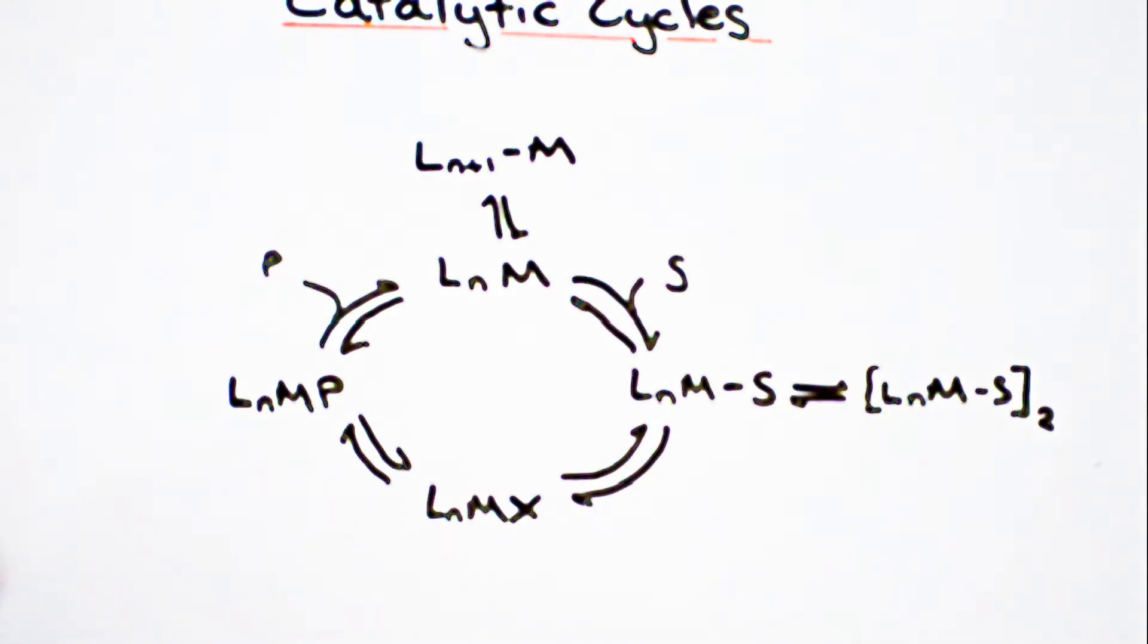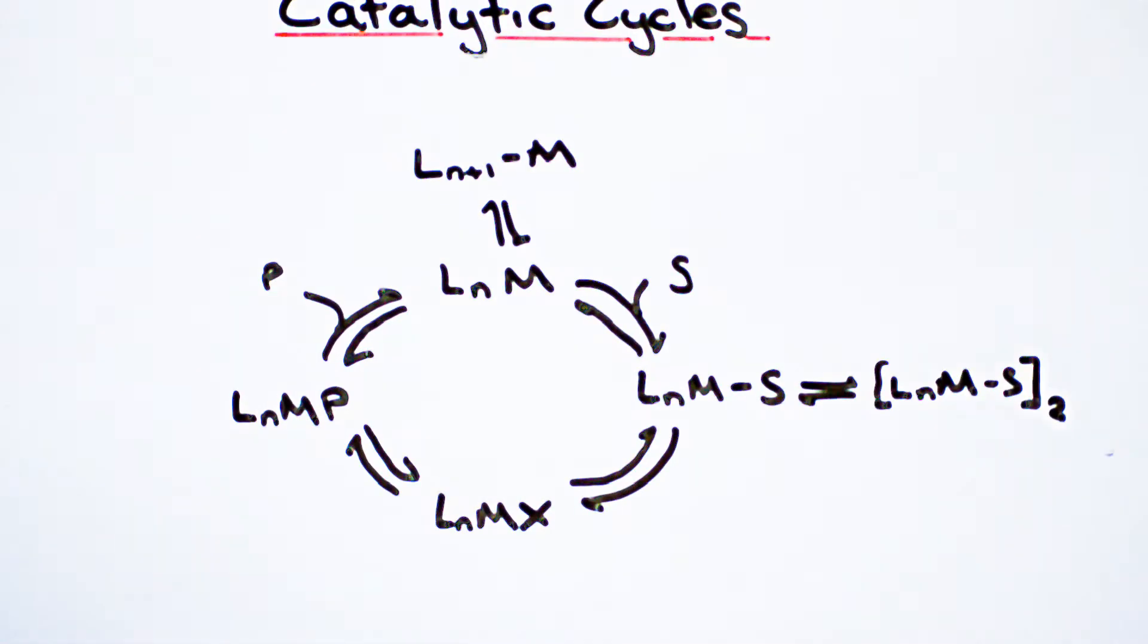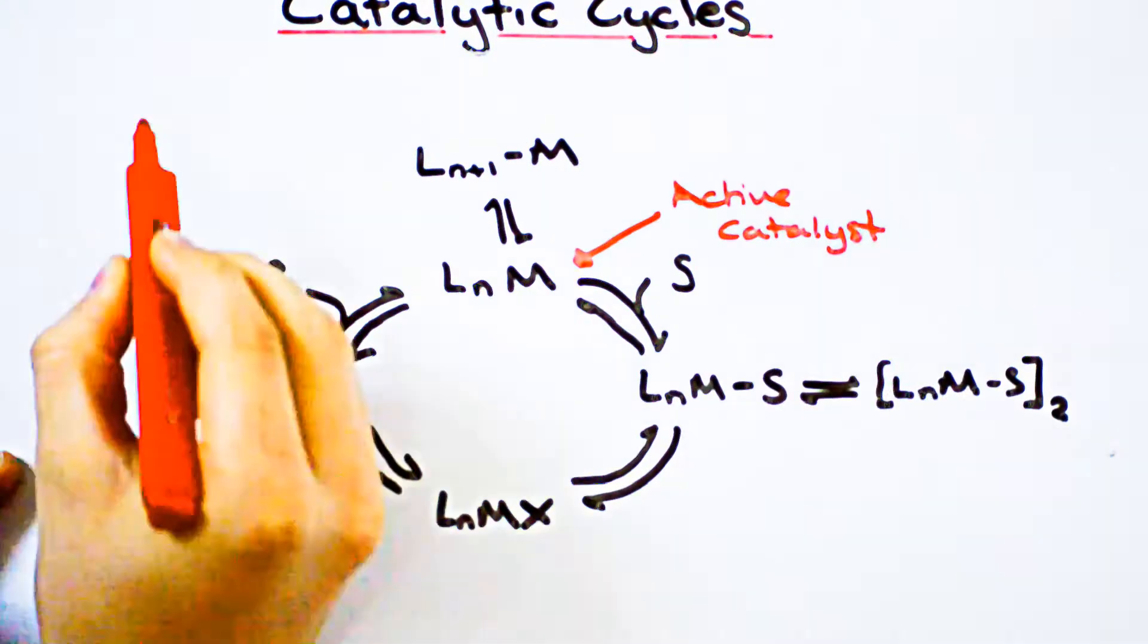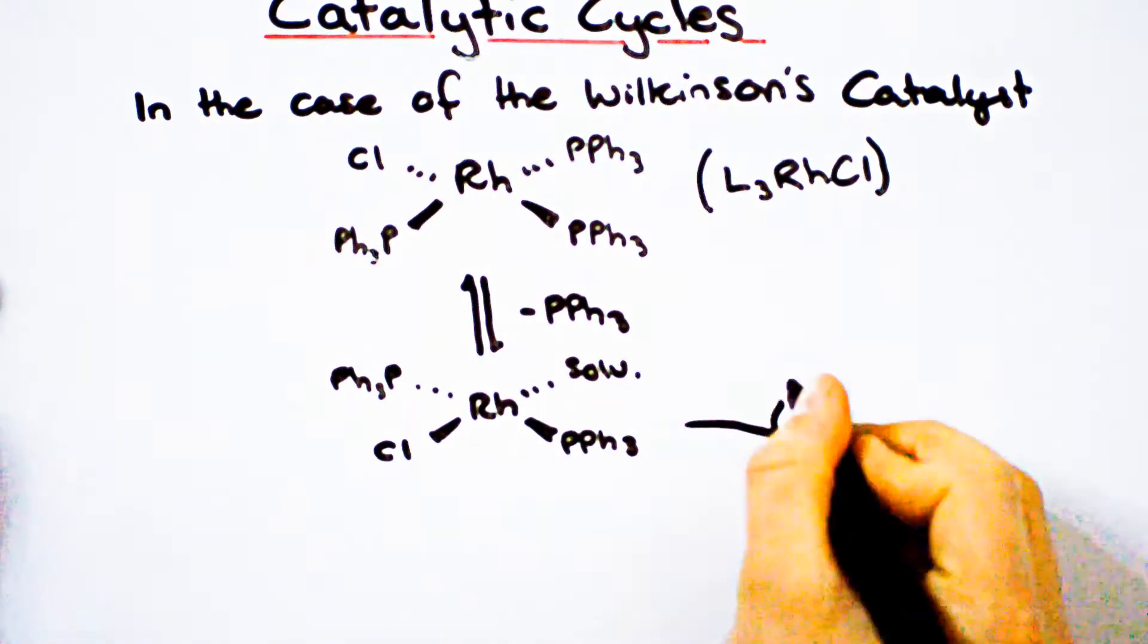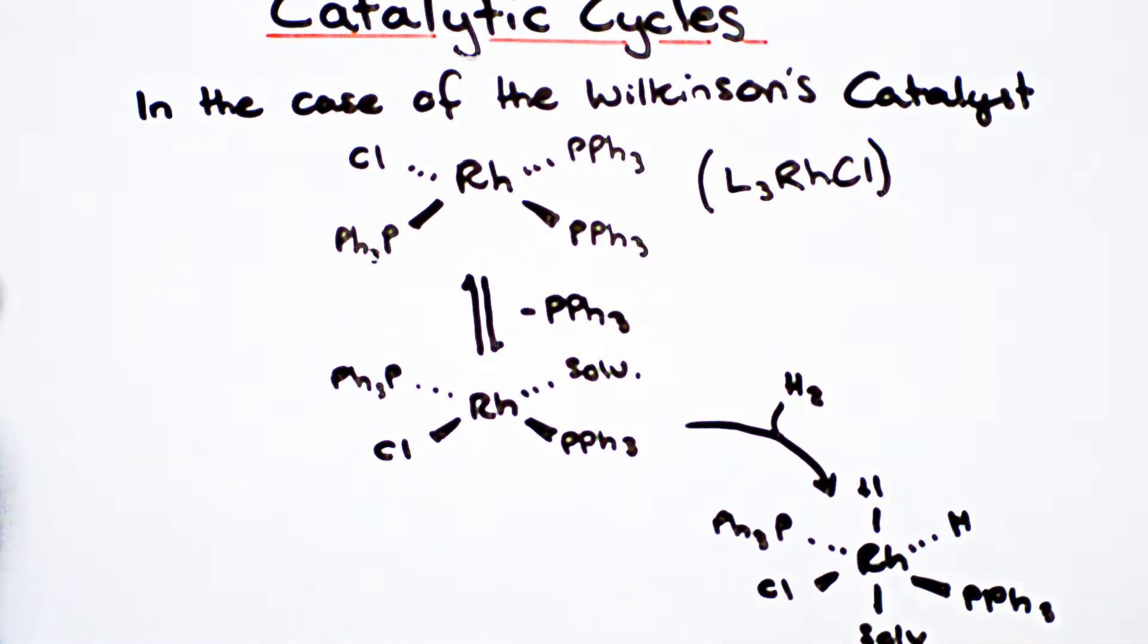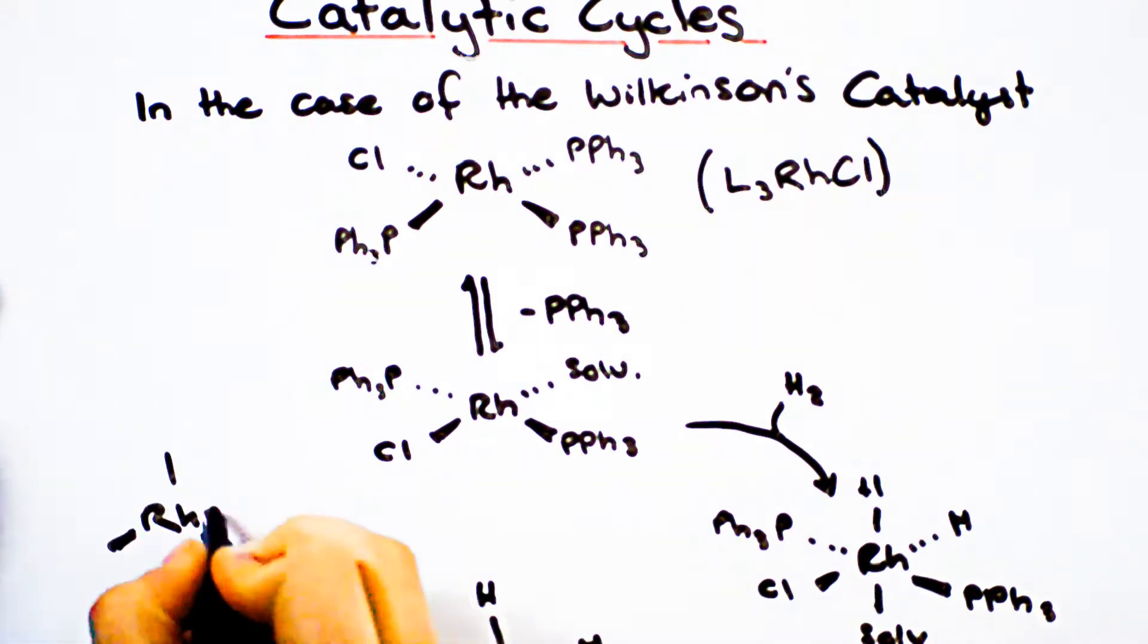Important reactions, such as the dimerization of certain molecules, can be shown in this cycle. As we can see from the diagram, the substance we add to the reaction is generally not the substance that acts as a catalyst. In the case of the Wilkinson's catalyst, this would be the replacement of a triphenyl phosphine with a solvent molecule.